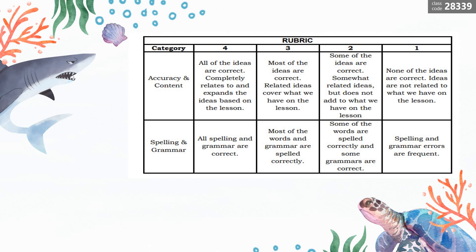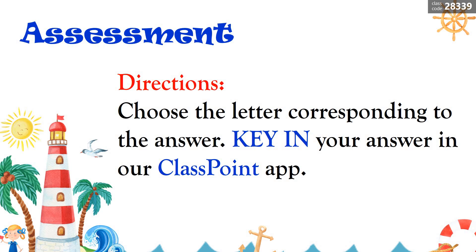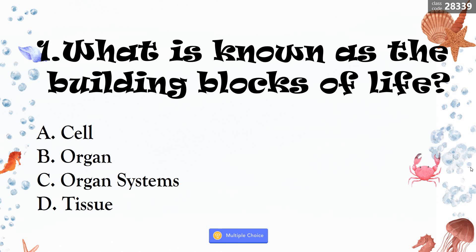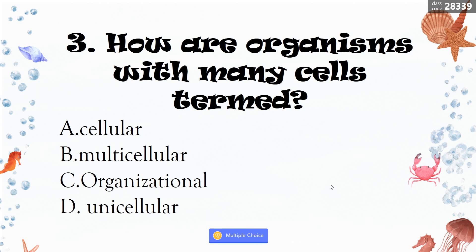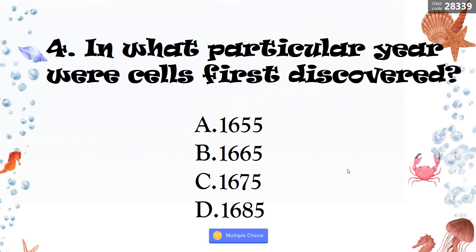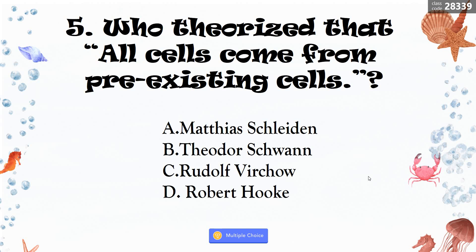Now let's have the assessment. Choose the letter corresponding to the answer and enter it in class point up with code 28339. Number 1 — what is known as the building blocks of life? Correct, letter A — cell. Number 2 — how do you call an organism with only one cell? Letter D — unicellular. Number 3 — how are organisms with millions of cells termed? Letter B — multicellular. Number 4 — in what particular year were cells first discovered? Letter B — 1665. Number 5 — who theorized that all cells come from pre-existing cells? That is Rudolf Virchow, letter C.